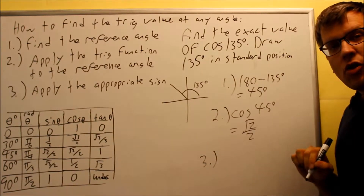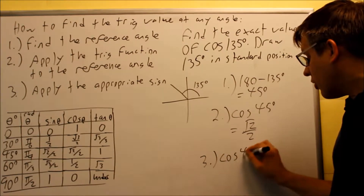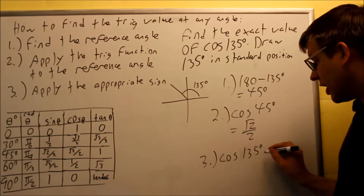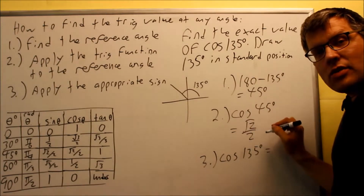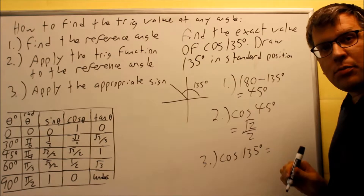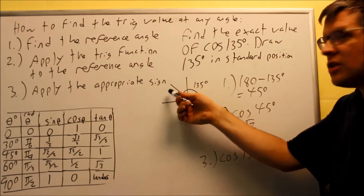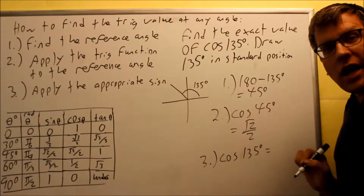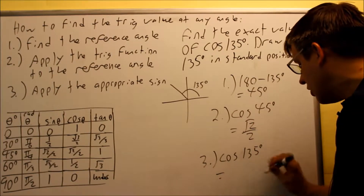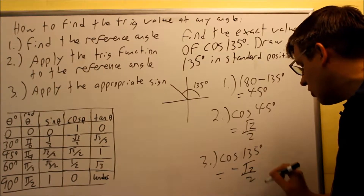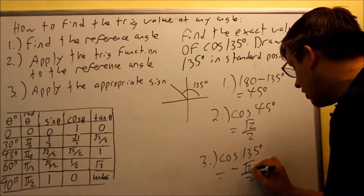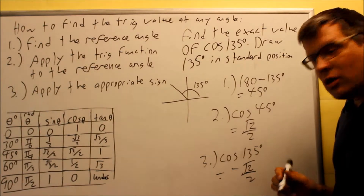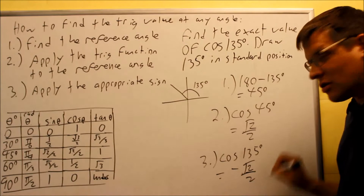Step three is where I get the answer to the whole problem. I want to find cosine of the original angle, 135. It's going to have the same numerical value as step two, except I have to apply the appropriate sign. We're in the second quadrant — all students take calculus means sine is positive in the second quadrant, so everything else is negative. I apply a negative sign: cosine 135 equals negative square root of two over two. That is the exact value. If you put cosine 135 in your calculator in degree mode, you'll get the same decimal equivalent.